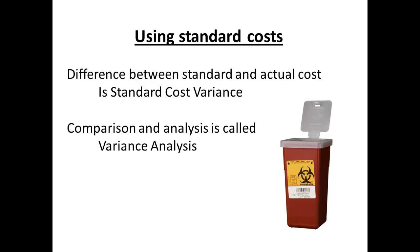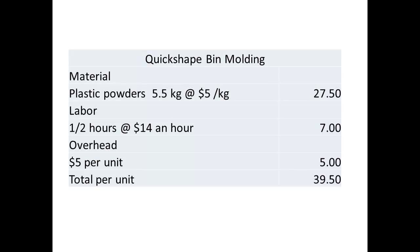The difference between standard cost and actual cost represents the standard cost variance. Variance analysis is the comparison between these costs. Let us work through an example to show the use of the terms and how the analysis is made. QuickShape makes bins used for garbage. They are heavy-duty plastic bins, and the quantity of material used, amount of labour required, and overhead are shown, so that the standard cost for a bin is $39.50.